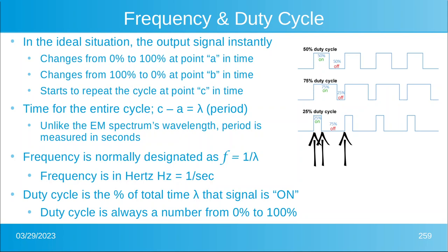In the ideal situation, the output signal instantly changes from zero to a hundred percent at some point A, then it changes from a hundred to zero percent at some point B, and then it repeats again at point C — those three arrows represent A, B, and C. Depending on how much time the signal is on, the average amount of power delivered to the load is going to change. The period is the time for the entire cycle.